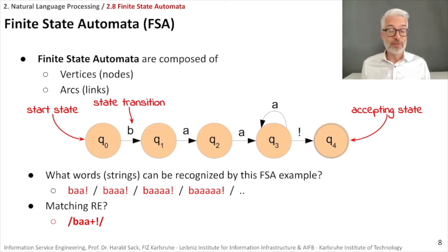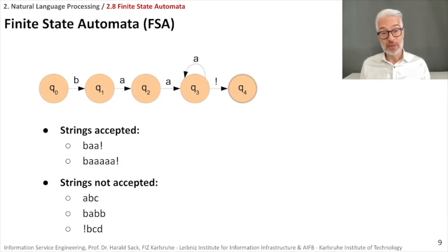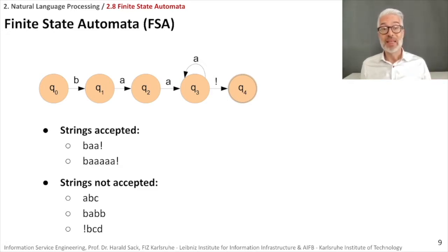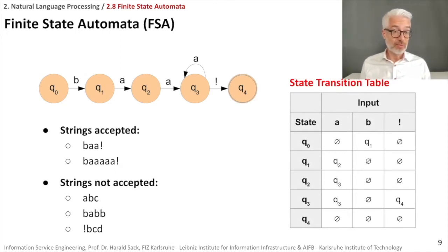This automaton is fairly simple. Accepted strings would be for example 'baa!' or 'baaa!'. However, strings that contain letters not in our alphabet used for state transitions will not be accepted — 'abc' is not an accepted string. Also 'babb' is not accepted, even though it only contains letters from the input alphabet. This shows the power of exactly this kind of automaton: it tries to match strings, and it is used for string matching like regular expressions — it essentially implements regular expressions via state transitions.